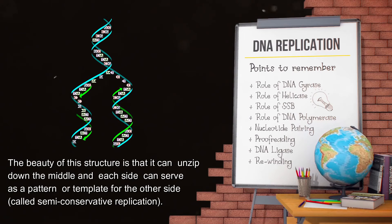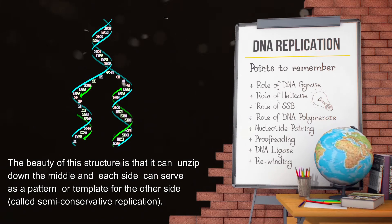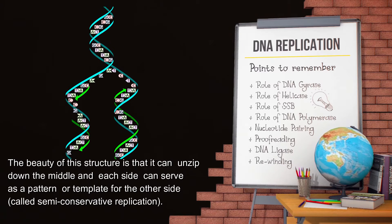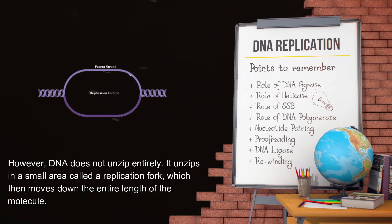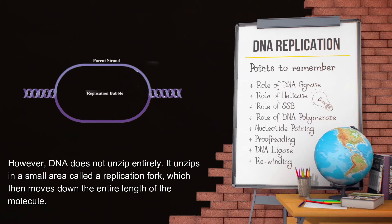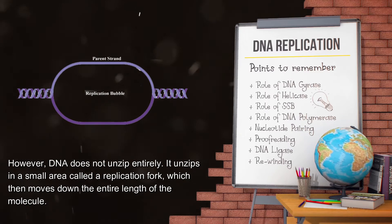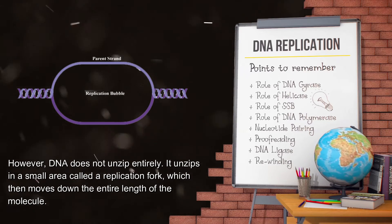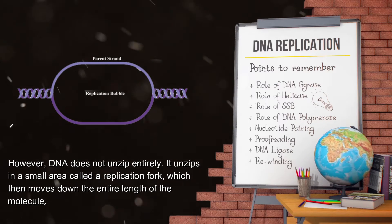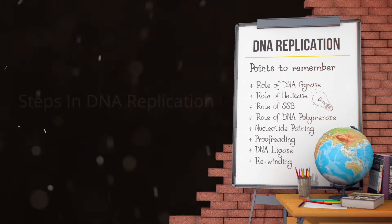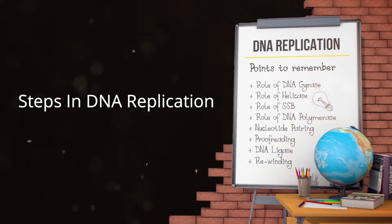The beauty of this structure is that it can unzip down the middle, and each side can serve as a pattern or template for the other side — this is called semi-conservative replication. However, DNA does not unzip entirely; it unzips in a small area called a replication fork, which then moves down the entire length of the molecule.